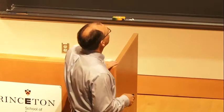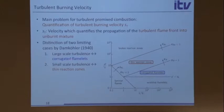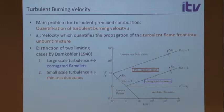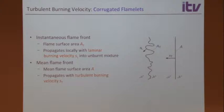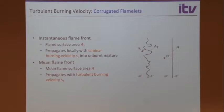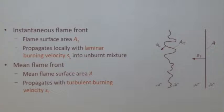Damköhler came up with two models: the large-scale turbulence limit, which we now identify as the corrugated flamelet regime, and the small-scale turbulence limit, which we now call the thin reaction zones regime. In the corrugated flamelet regime, the flame structure is not disturbed — it still moves with a laminar burning velocity S_L — but the surface area A_T is greatly increased.